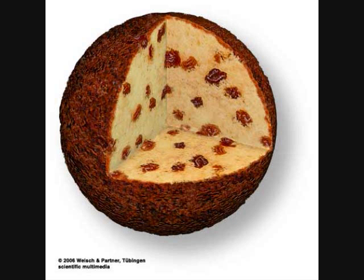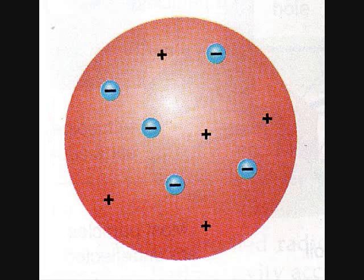J.J. Thomson, around the turn of the 20th century, proposed the plum pudding model, where negative electrons were distributed within a region of positive charge.